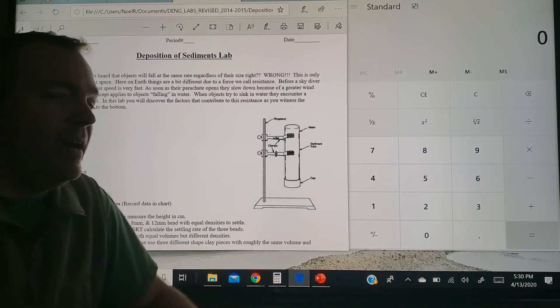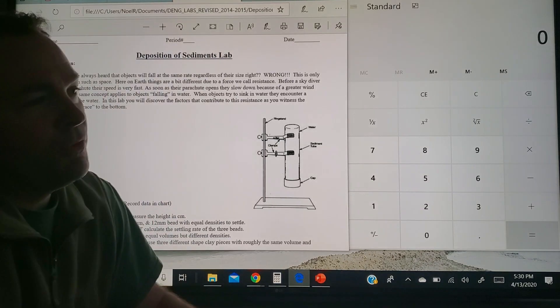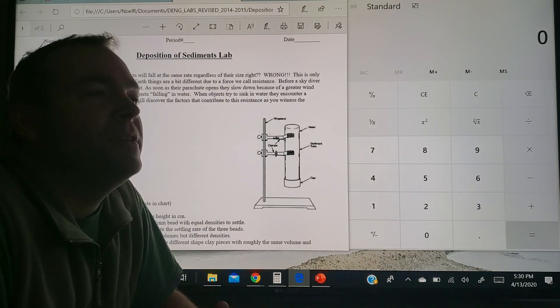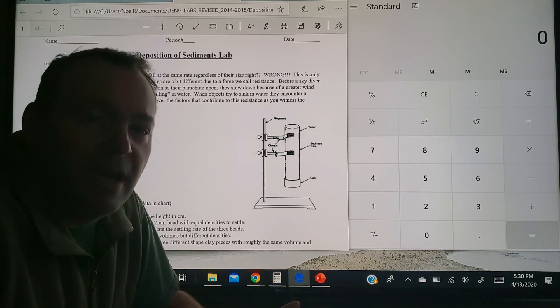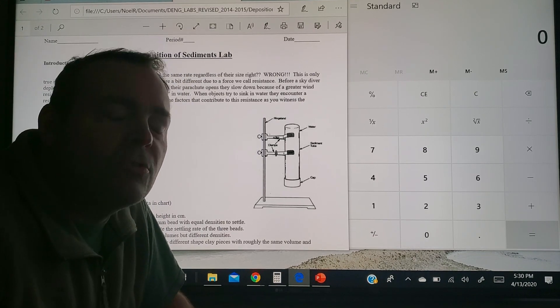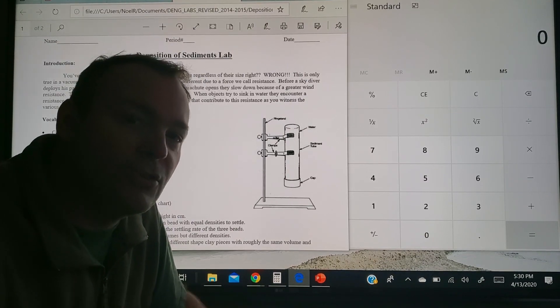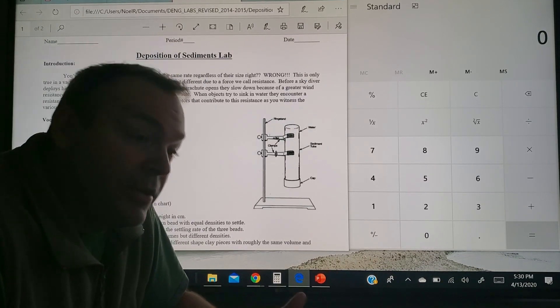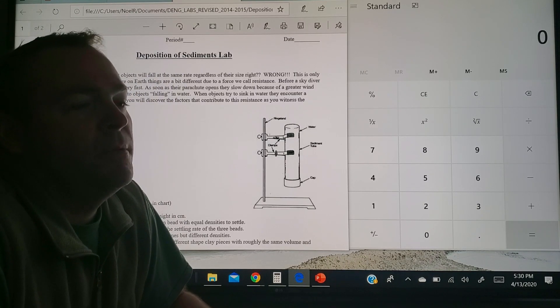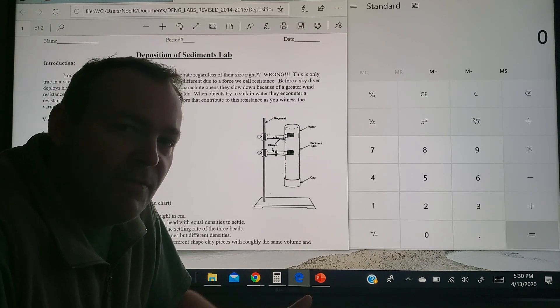First off, deposition. Remember there are three major variables: the shape of the particle, the density of the particle, and of course the size of the particle. As far as shape goes, the rounder is going to settle faster, least amount of surface area. The denser object will settle faster, and of course the bigger ones tend to settle faster because they have more mass.